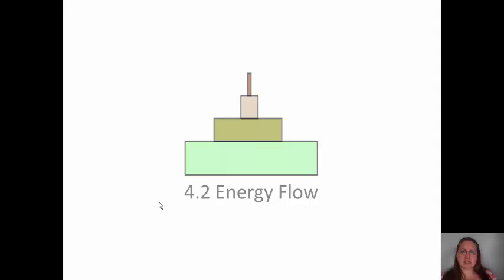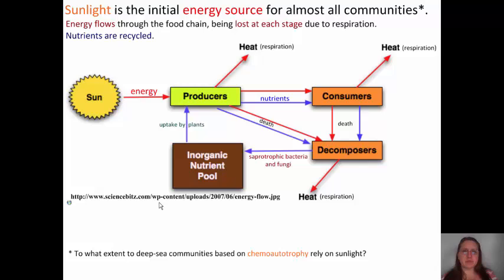That was 4.1. Our second topic is 4.2, which is energy flow. The first key point is that sunlight is the initial energy source for almost all communities. We did talk about how some chemoautotrophs do not use energy from the sun and can use chemicals instead. Energy will flow through the food chain and it will be lost at each stage due to respiration, while all nutrients are recycled. You have your energy starting with the sun going into our producers.